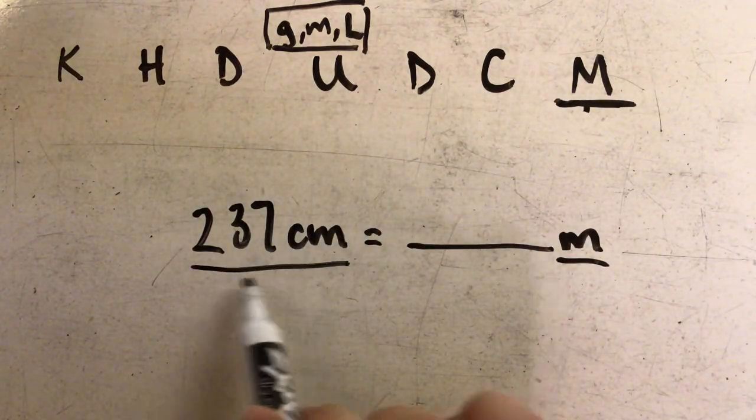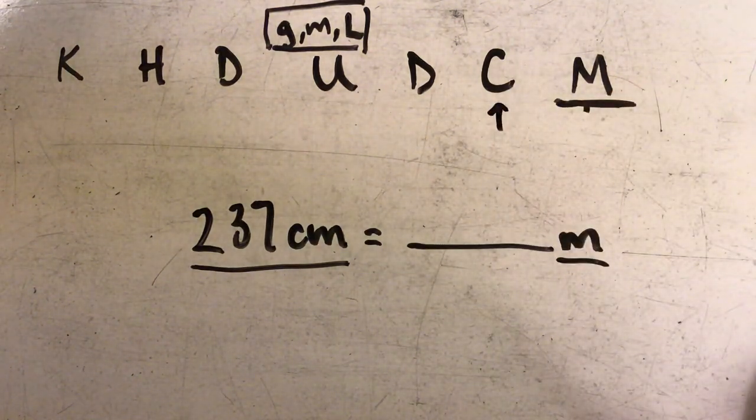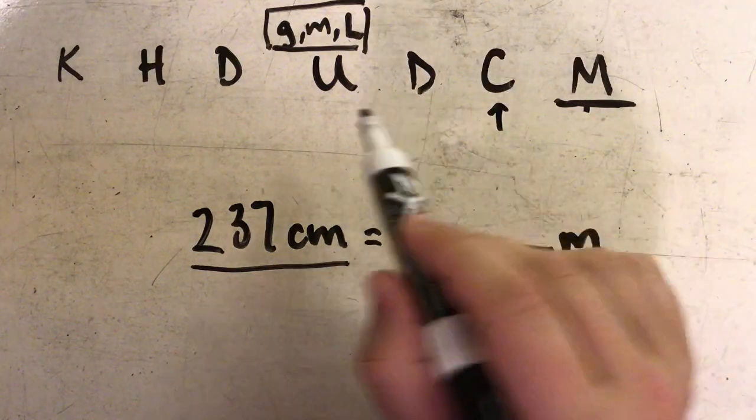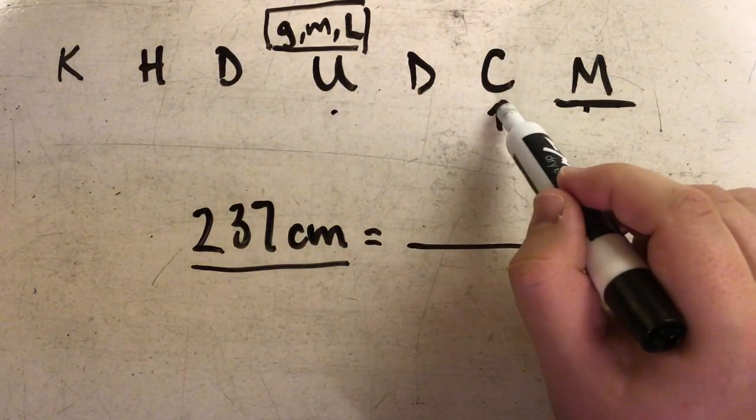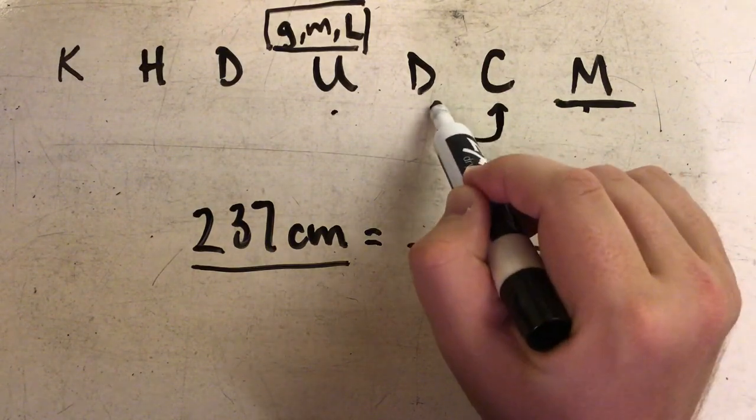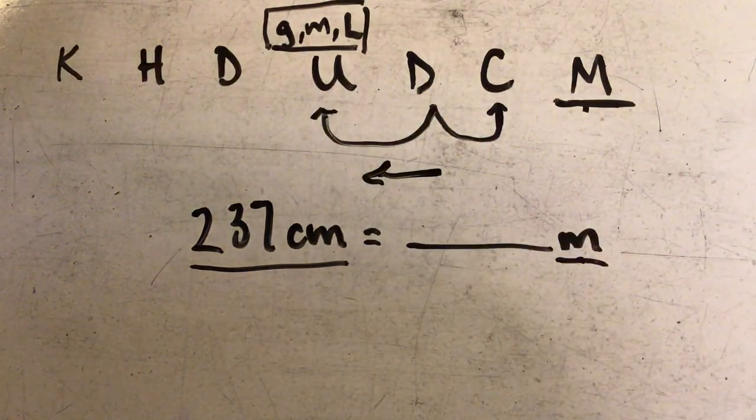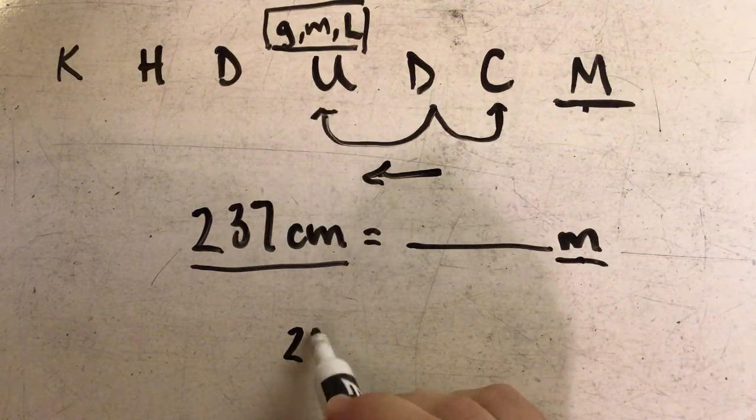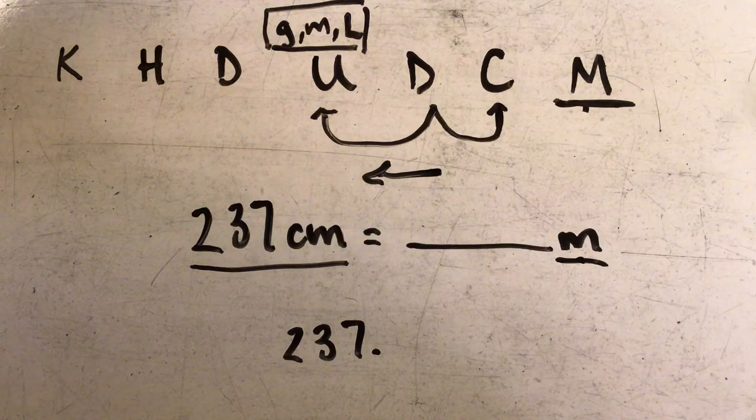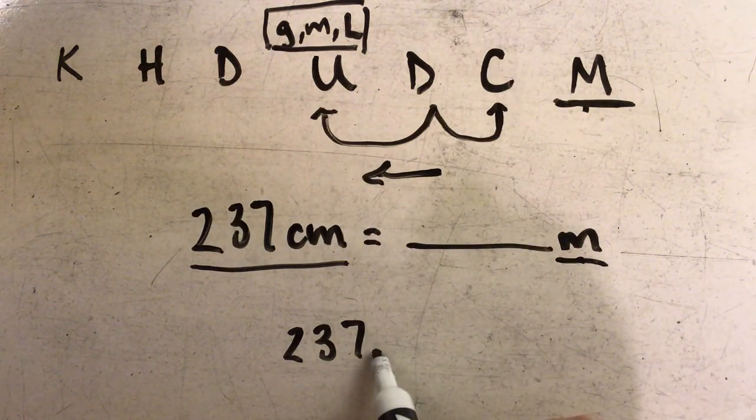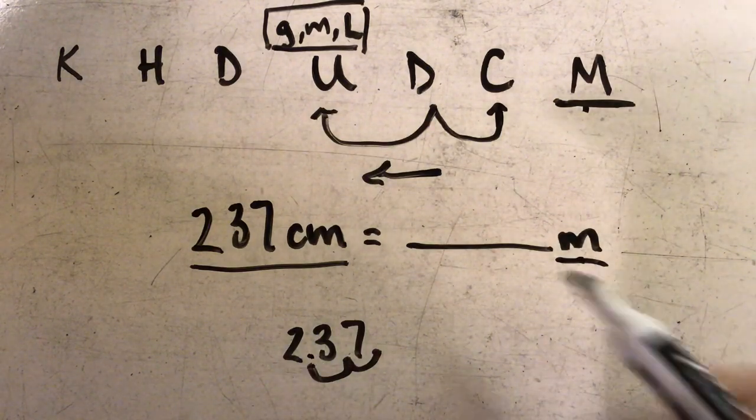In this case they gave me centimeters, so I'm going to start at centimeters and I'm trying to get to meters, which is under my U and my basic units. And I find that I need to move my decimal point one, two spaces to the left. So if I pull my number down here and I put my decimal point out behind the ones, I need to move that decimal once, twice to the left, and my new number would be two and 37 hundredths of a meter.